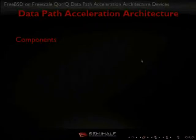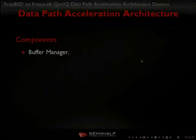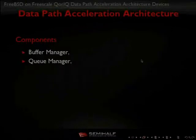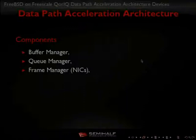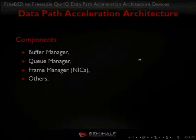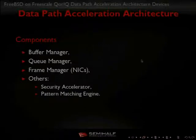What is DPAA? DPAA consists of various components to accelerate network processing. We have a buffer manager to manage memory for networking, a queue manager that interconnects components inside the system — for example, creating a hardware-managed queue between processor and network interface. We have a frame manager that integrates network interfaces responsible for parsing packets and routing them to devices inside the SoC. And we also have accelerators like a security accelerator for IPsec and a pattern matching engine for deep packet inspection.